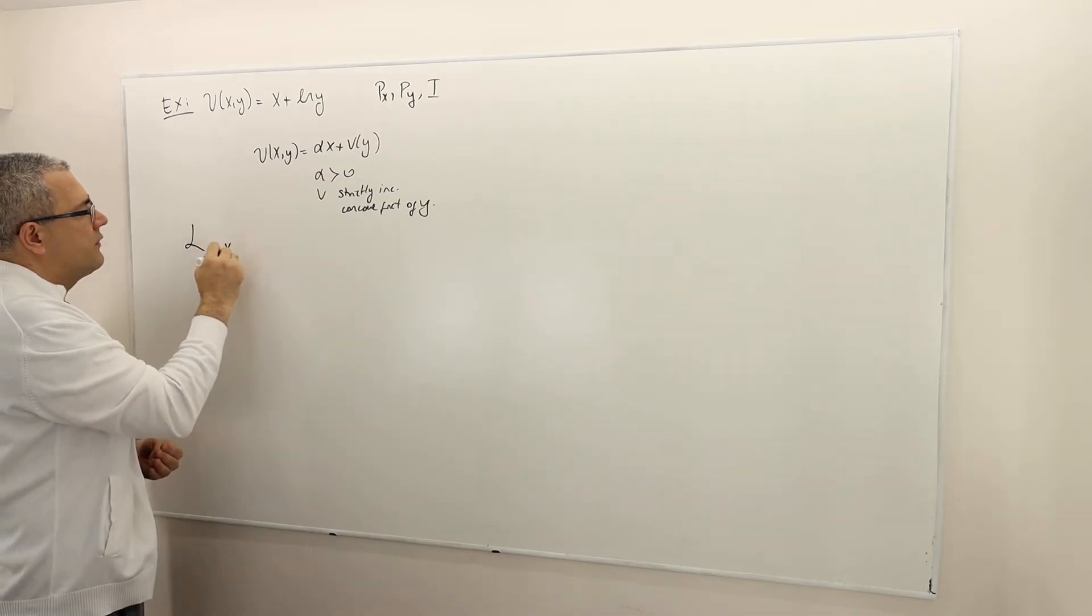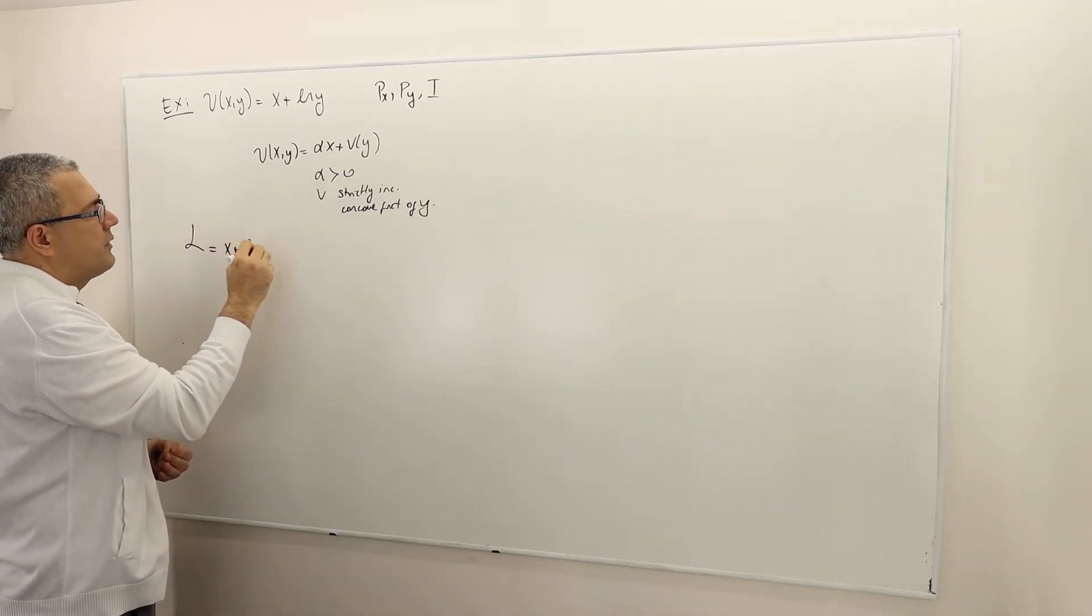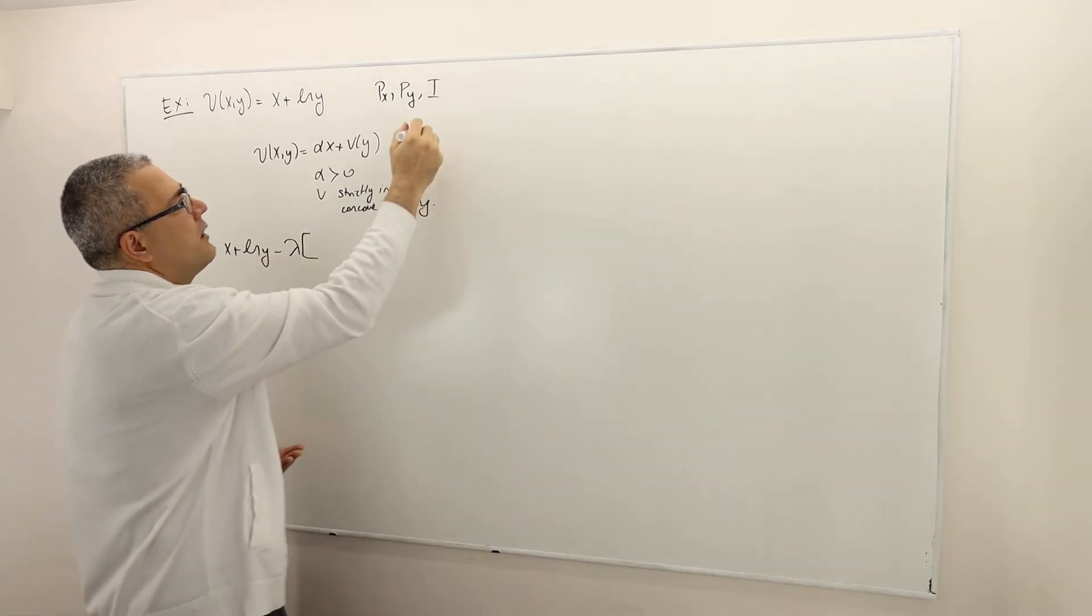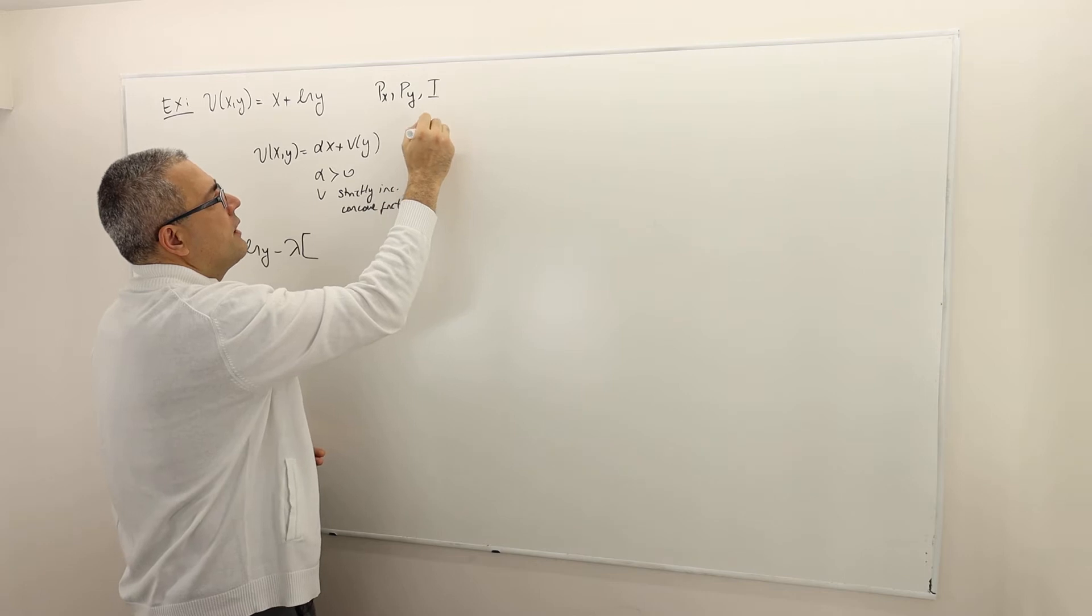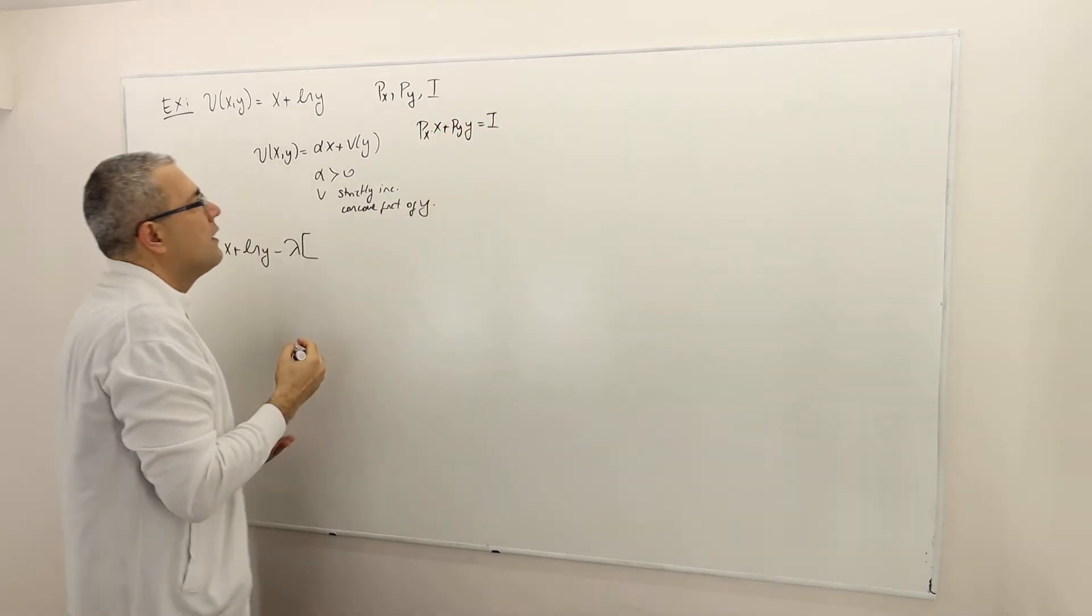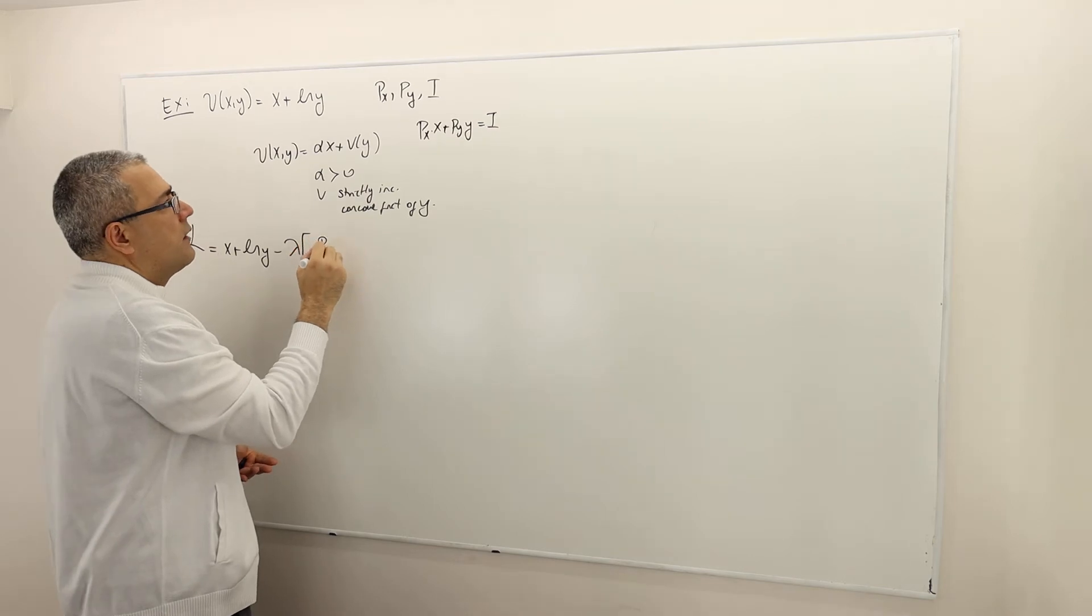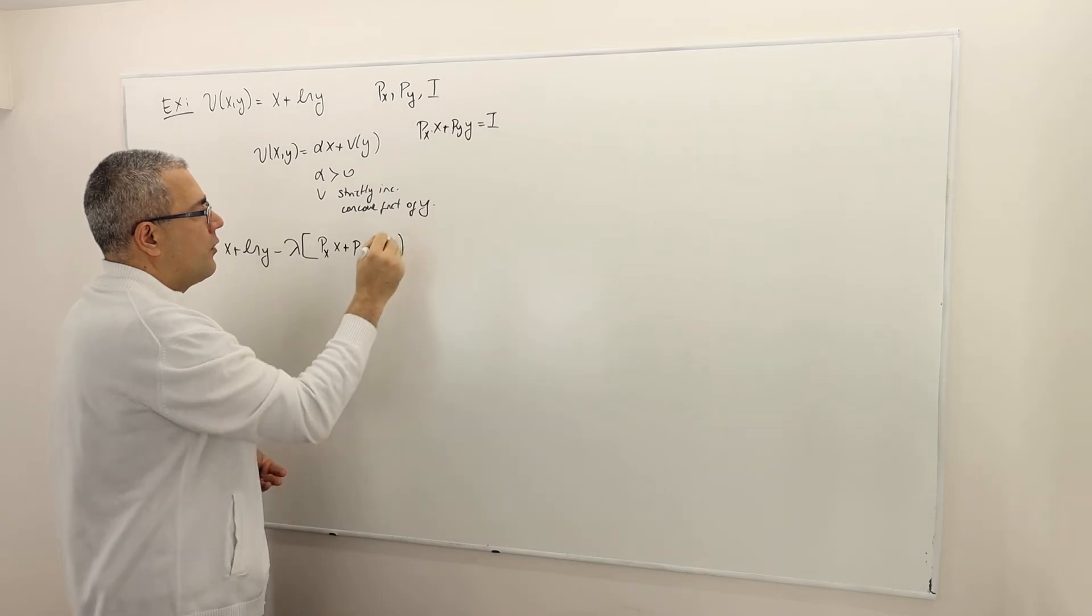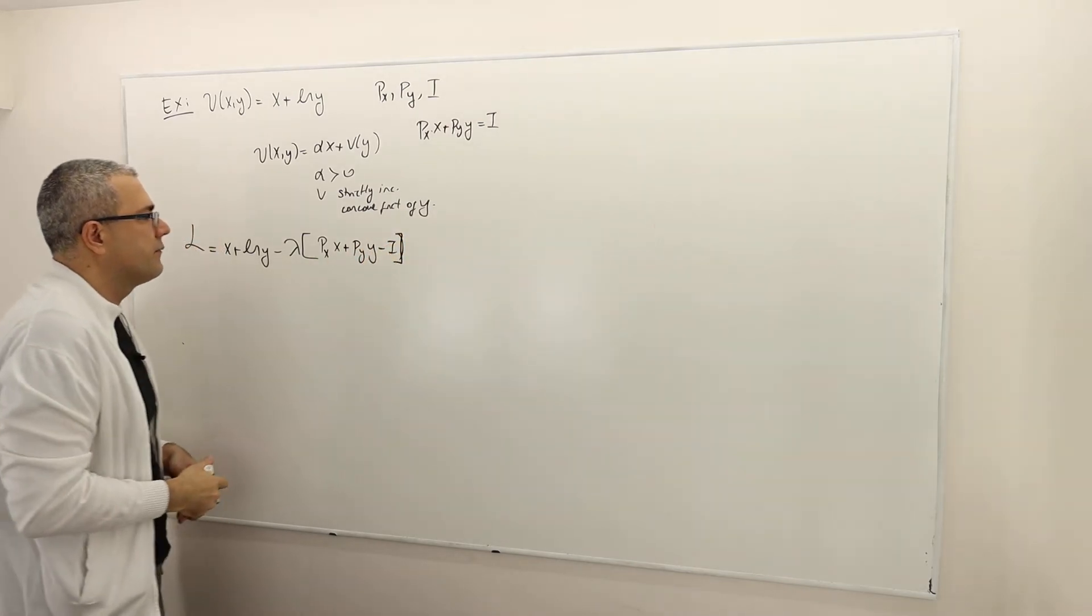The Lagrangian is the objective function x plus ln y minus lambda and the constraint. Remember the constraint is basically the budget constraint px·x plus py·y equals income. So my lambda term is multiplied by this.